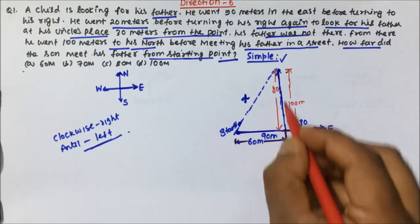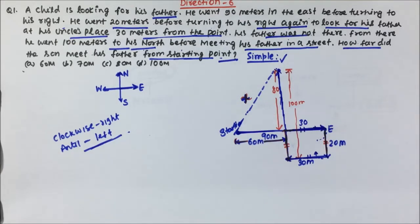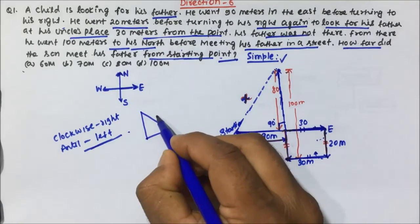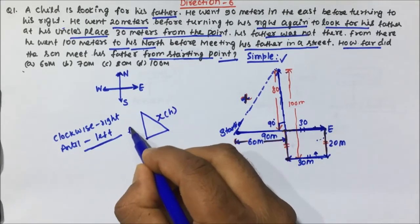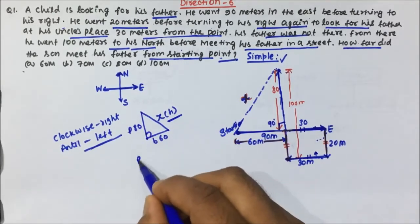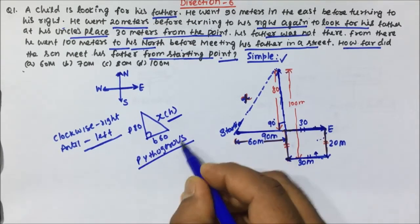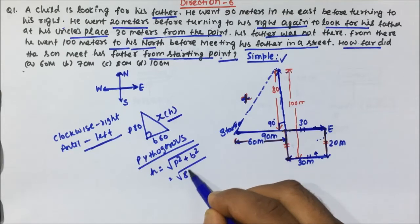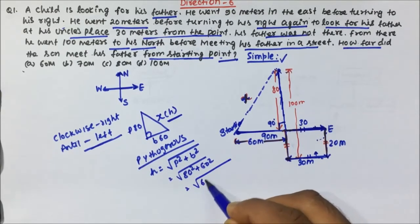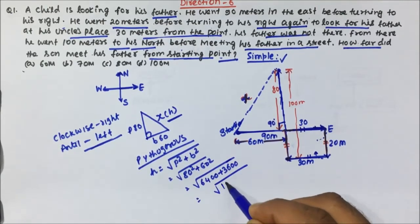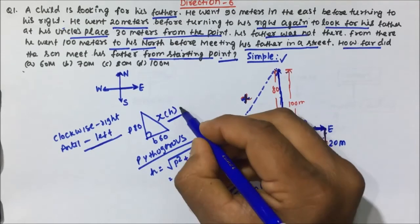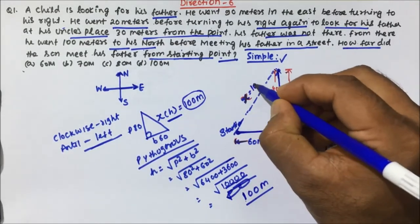Now I know this distance and this distance, and we have to calculate the hypotenuse. This is a 90-degree angle, so we use the Pythagorean theorem. Hypotenuse² = perpendicular² + base². So that is 80² + 60² = 6400 + 3600 = 10000. Taking the square root gives us 100 meters. So the hypotenuse equals 100 meters.